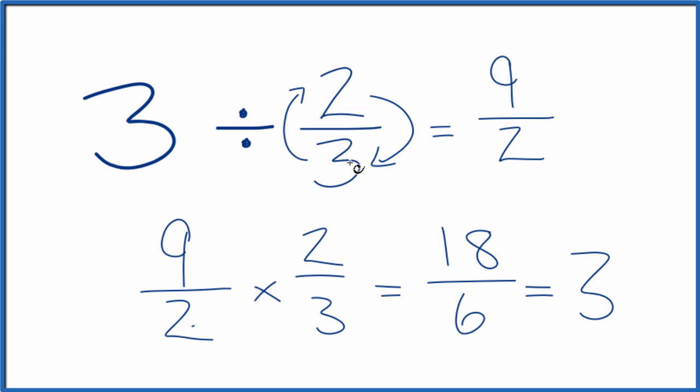When we divide 3 by 2 thirds, we get 9 over 2. This is Dr. B. Thanks for watching.